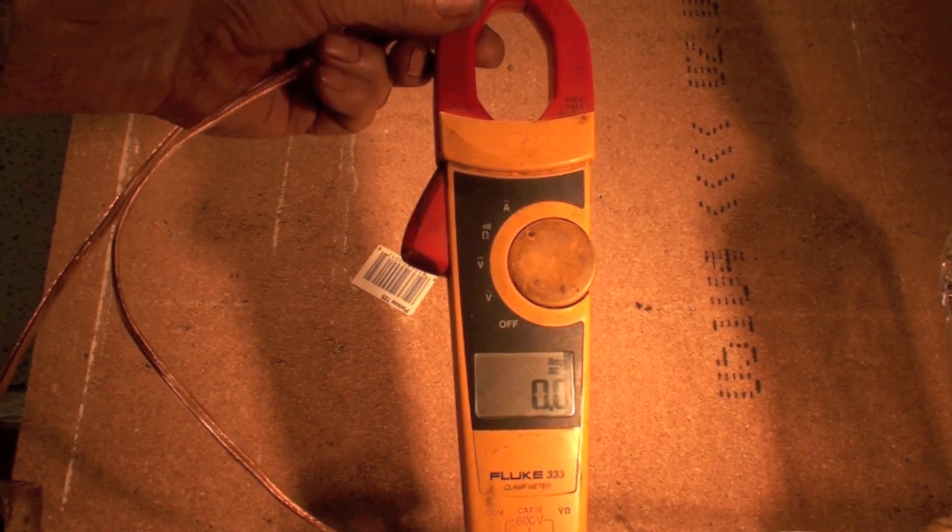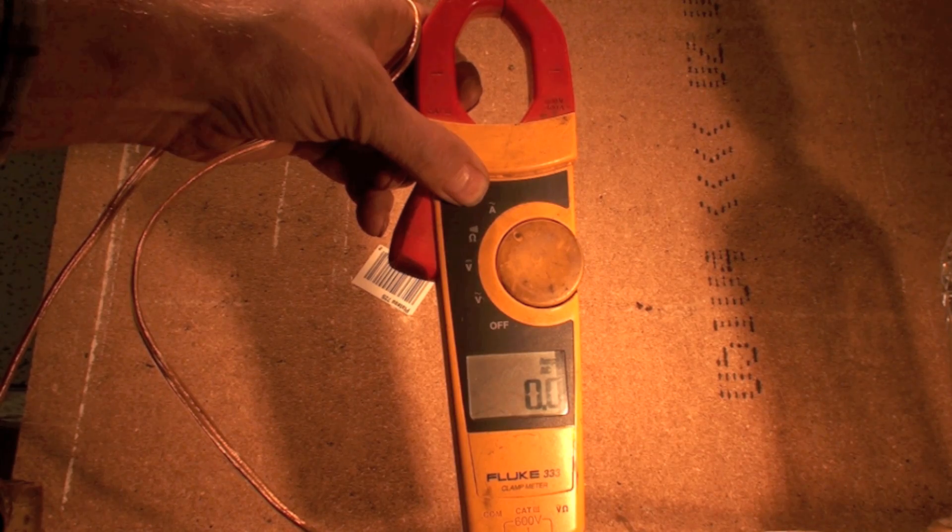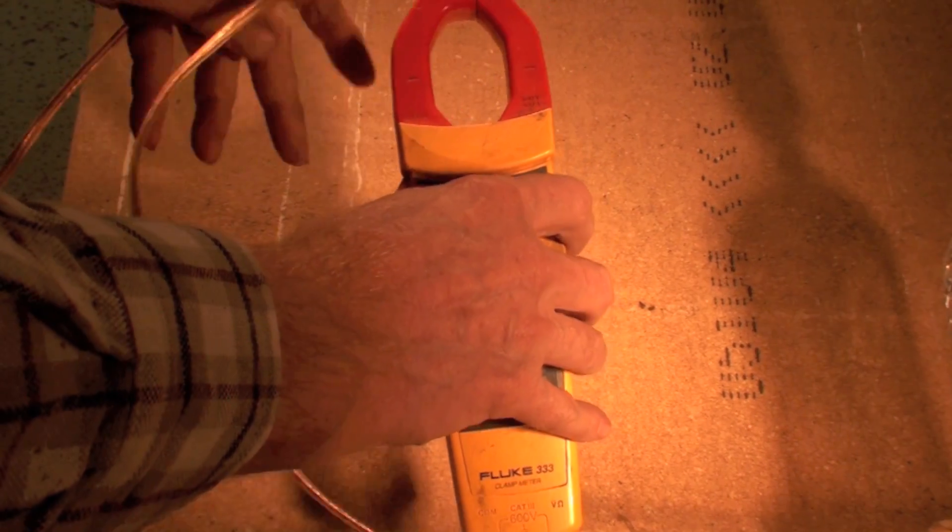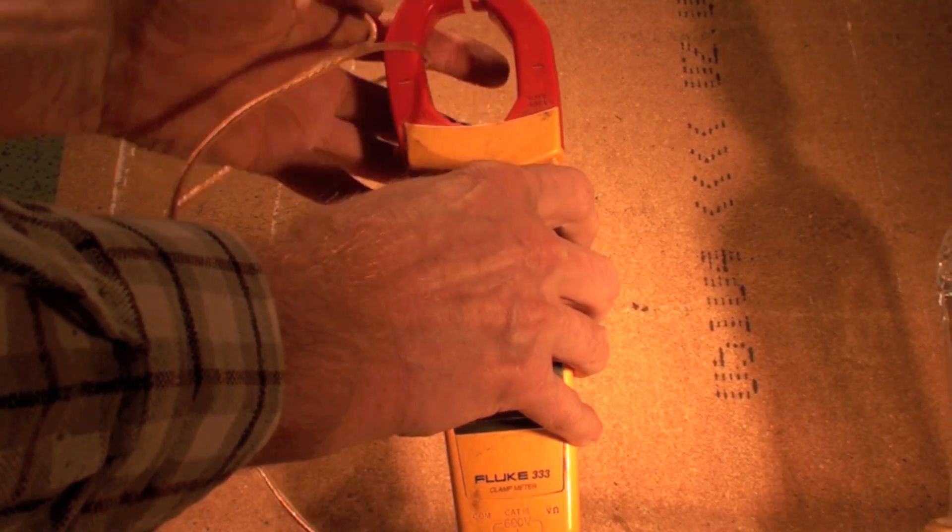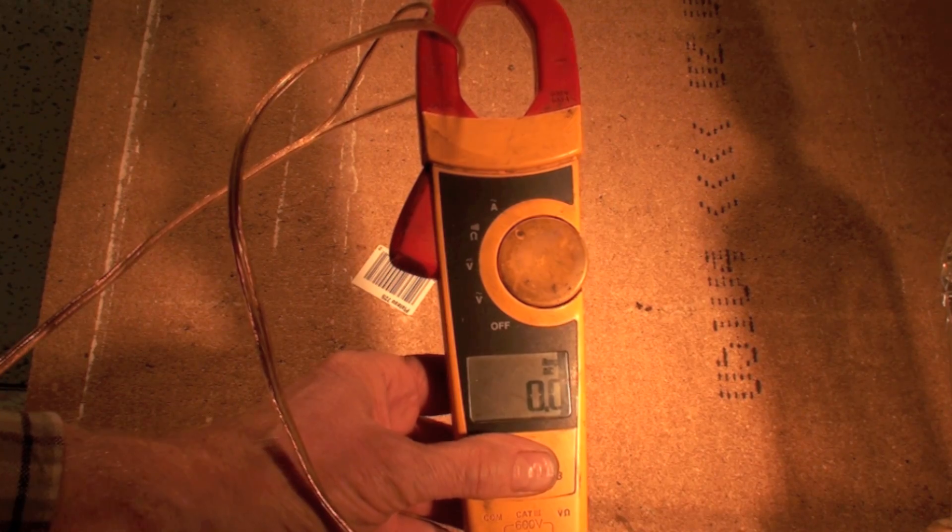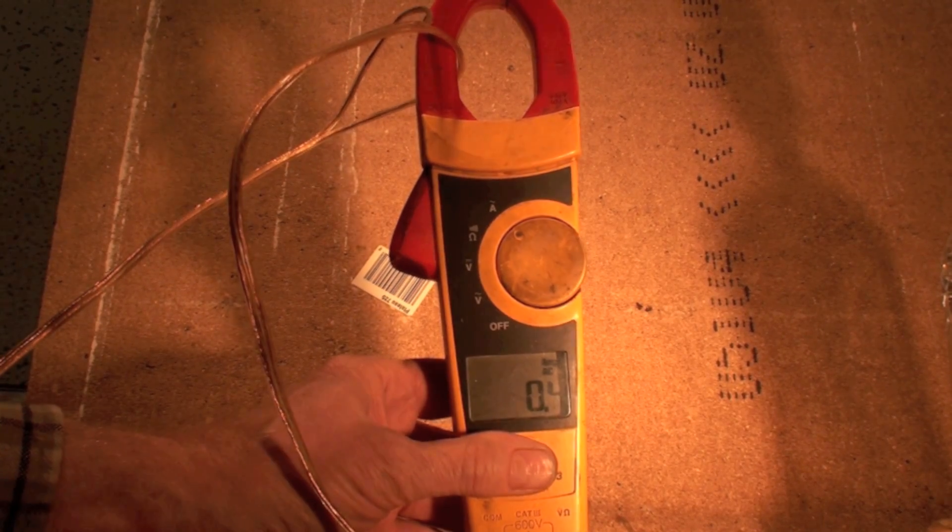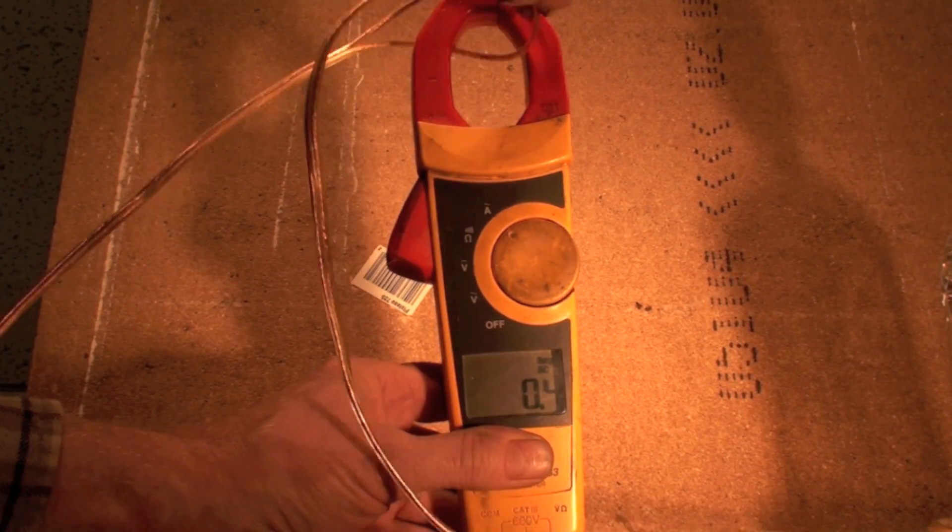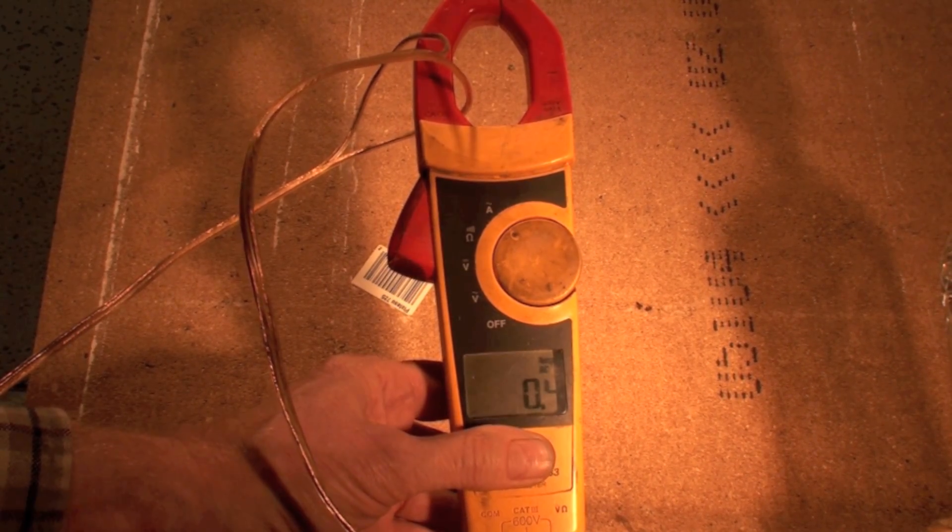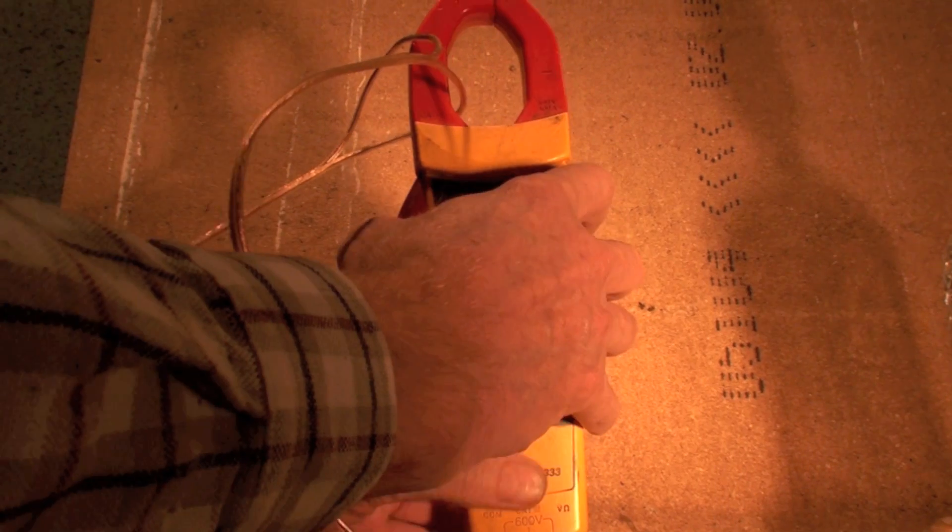Now we're going to check this thing in amps. We are in the amp position - that's A with a squiggly thing above, and that is for AC amps. It's reading zero, and I'm going to put one of these wires that's going to a lamp through here. If I turn the lamp on, it's still reading zero, but when I turn the lamp on, now it's reading 0.4 amps. I can move this around in here and it doesn't seem to make much difference as long as it's clamped on one wire. You can see 0.4 amps - I've got one wire clamped.